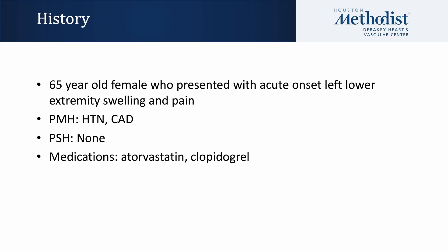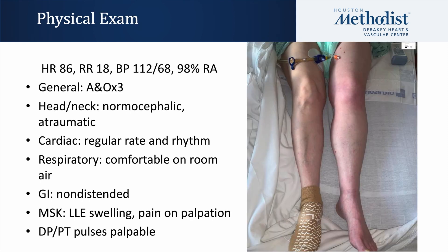This is a 65-year-old female who presented with acute onset left lower extremity swelling and pain. Her past medical history was significant for hypertension and coronary artery disease with no previous surgical interventions. On physical exam, her vitals were within normal limits and the only significant finding was left lower extremity edema and pain extending from her hip down to her foot.